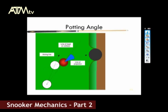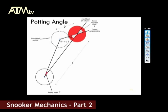What I was interested in was how the projection angle relates to the potting angle. To do this, we can examine the geometry from the diagram. The letter D represents the distance between the cue ball and the object ball. The projection angle and the potting angle are shown within the triangle. By applying the sine rule to this diagram, we obtain an expression that looks like this.